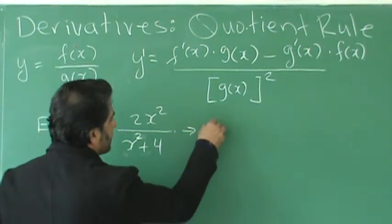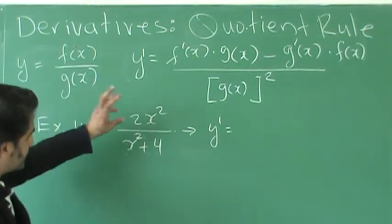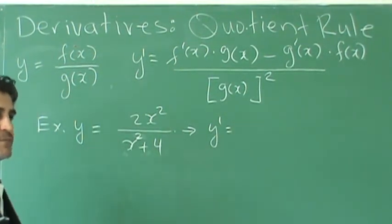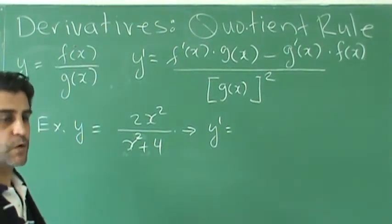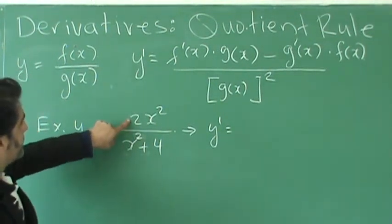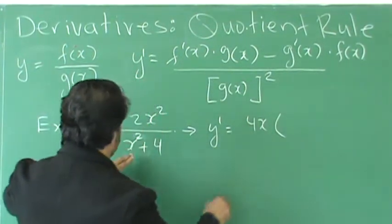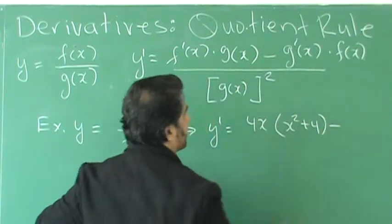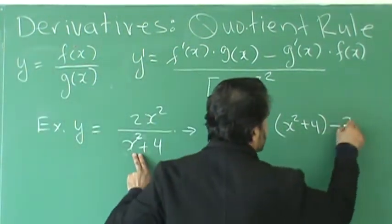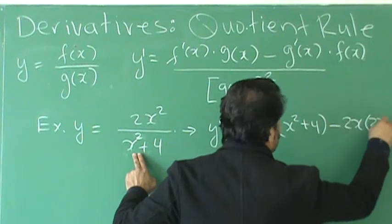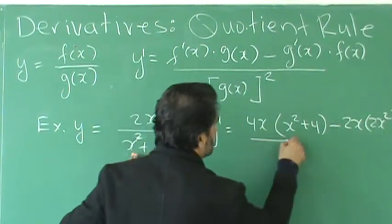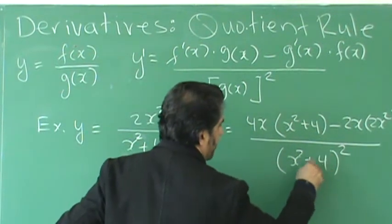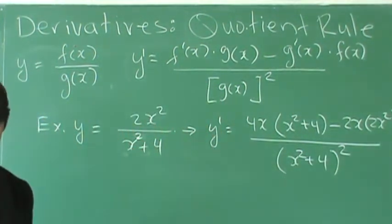Now to apply the quotient rule, we take the derivative of the top, power rule or chain rule, all those rules that you learned in previous videos, we're going to apply this. So the top would be 4x multiplied by the bottom x squared plus 4, subtract. The derivative of the bottom would be 2x multiplied by the top, and we square the bottom x squared plus 4. That's how we apply the quotient rule.